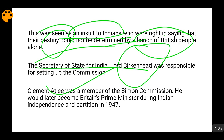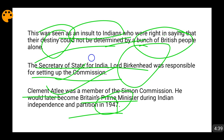One more member of this commission was Clement Attlee, who would later become British Prime Minister at the time of Indian independence and partition in 1947. It was Attlee who sent Lord Mountbatten to India to pass the Indian Independence Act of 1947, also known as the Mountbatten Act. So if asked which British Prime Minister was a member of the Simon Commission, the answer is Clement Attlee.